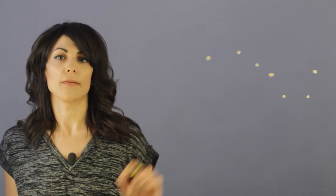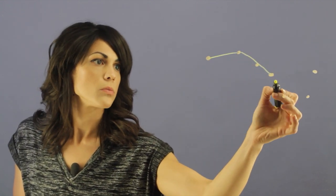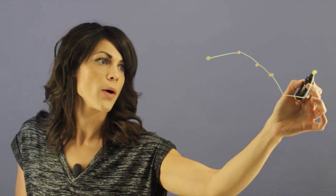So the Big Dipper generally looks like this. It's a recognized pattern of seven stars. So it goes something like this. It's like a little wagon.